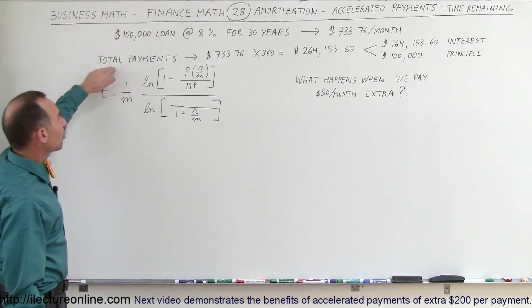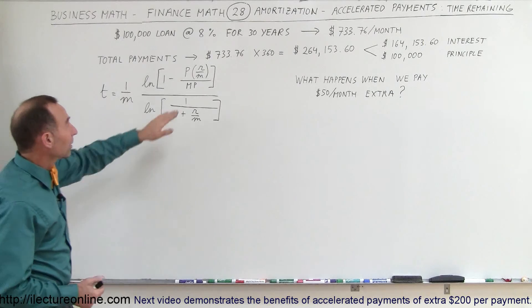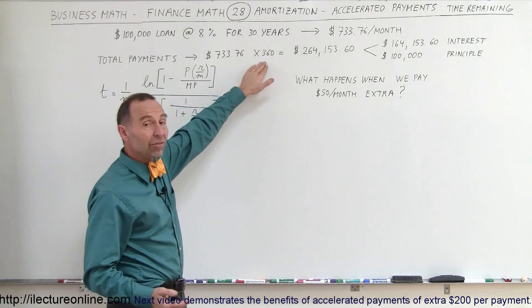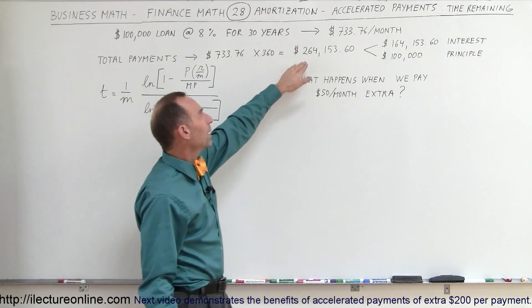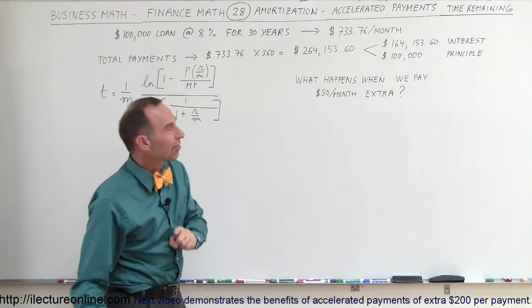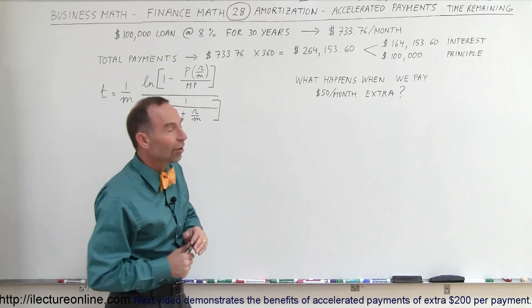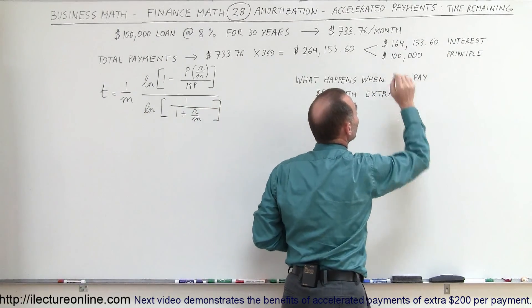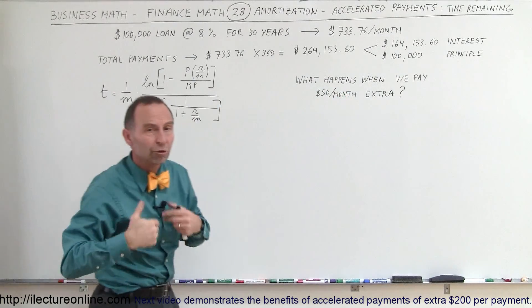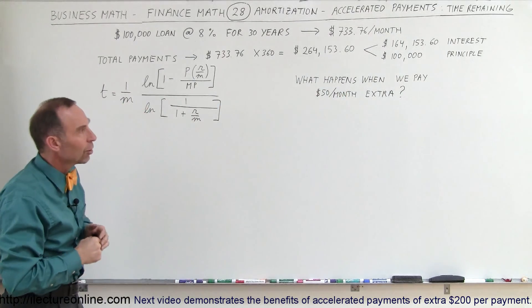So the total payments we will make over the life of the loan would be the monthly payments times the number of months, and of course a 30-year loan that would be 360 months, a total payment schedule of $264,153.60, of which $164,000 of it will be interest payments and $100,000 would be paying back the principal of the loan.